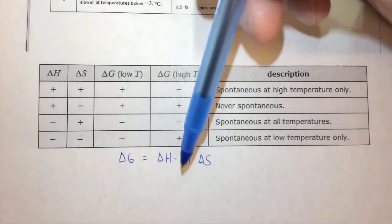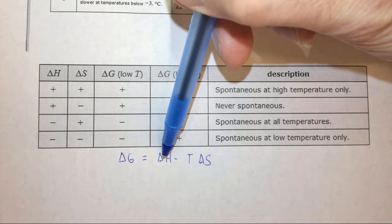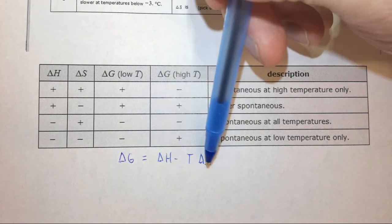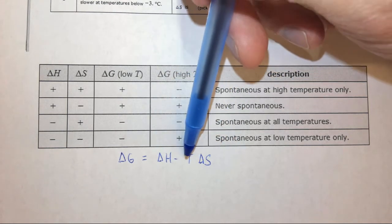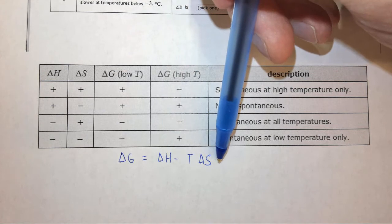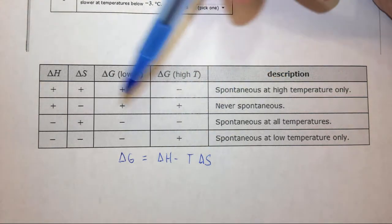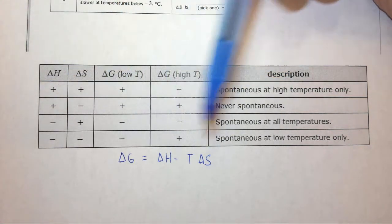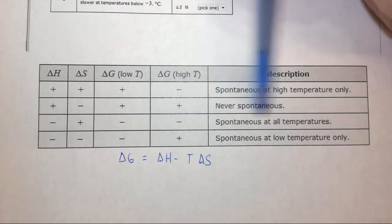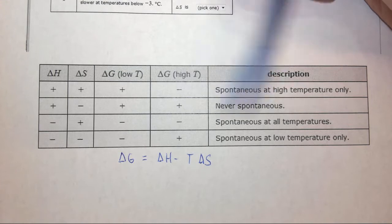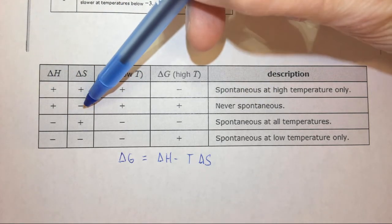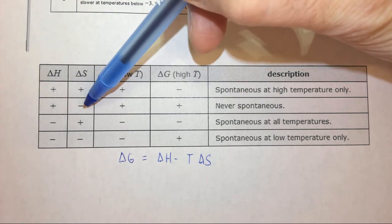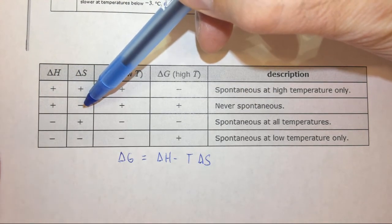Let's look at the next example. If delta H is positive and delta S is negative, then T delta S will be positive, and positive plus a positive is going to be positive. This will never be spontaneous. So if delta H is positive and delta S is negative, the reaction is never spontaneous.